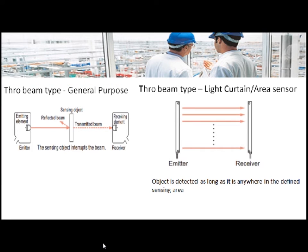In through beam type, the general purpose type consists of an emitter and a receiver, and the receiver will detect the signal that is blocked by the sensing object. In addition to that, there is another type which is most commonly used: the light curtain or area sensor, which consists of a series of emitters and a series of receivers.